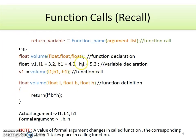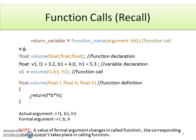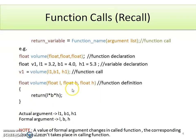L1, B1, and H1 are declared with some values. The next line is a function call where we are calling the function by passing parameters L1, B1, and H1 and their values, and we are storing the return value in V1. This is the definition of function volume, where we are performing the multiplication of L, B, and H. L, B, and H are the formal arguments, while L1, B1, and H1 are the actual arguments passed from the calling function.